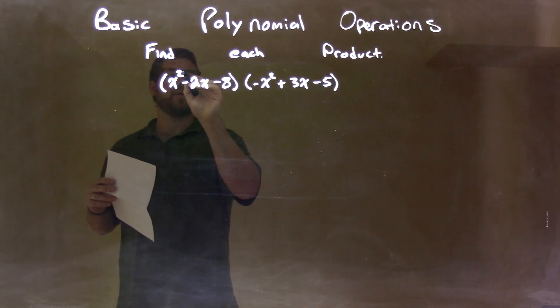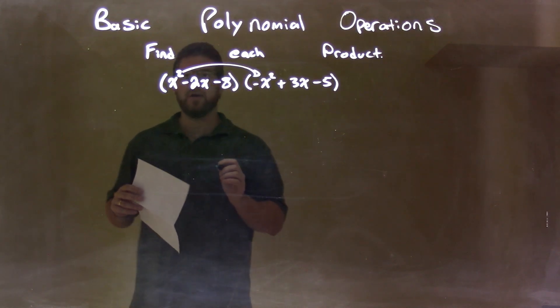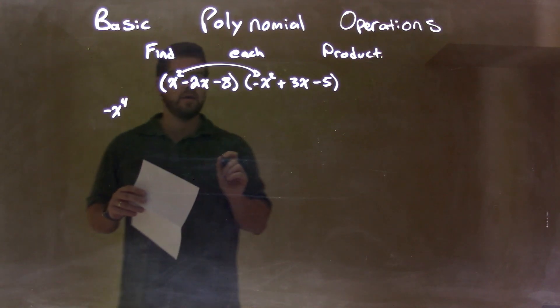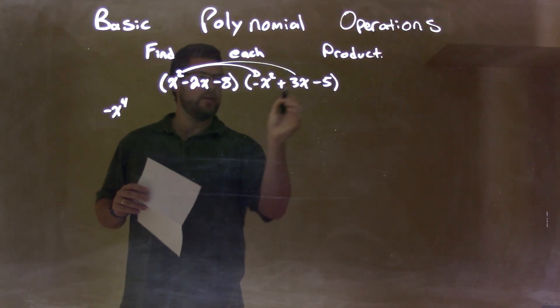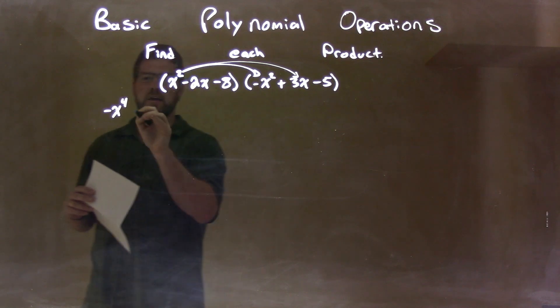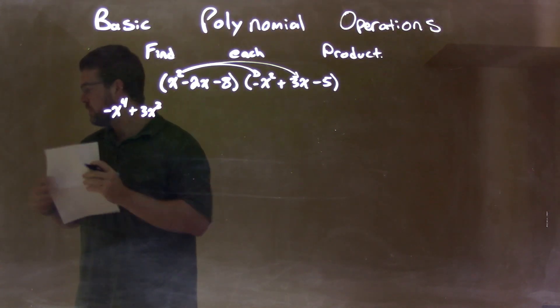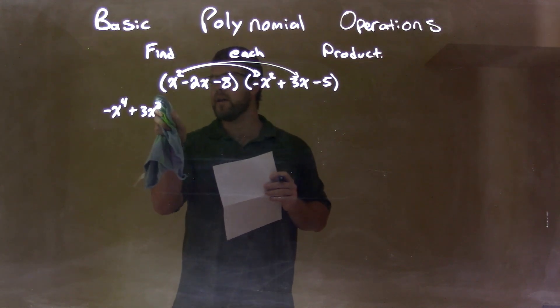So, x squared times a negative x squared is a negative x to the fourth power. Then, x squared times a 3x right here is a 3x to the third power. I don't like that 3 right there, excuse me.